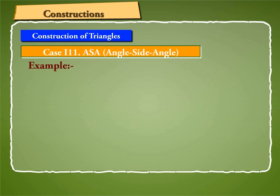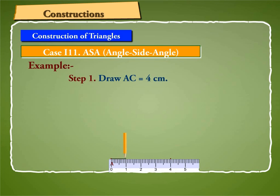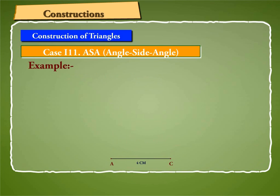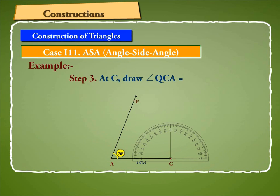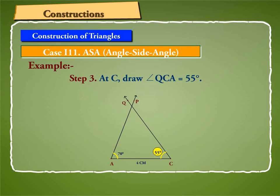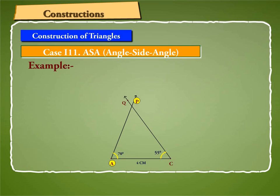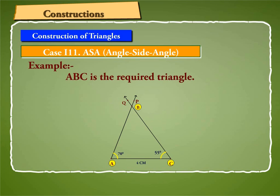We take the following steps. Step 1: Draw AC equal to 4 cm. Step 2: At A, draw angle PAC equal to 70 degrees. Step 3: At C, draw angle QCA equal to 55 degrees. Let PA and QC intersect each other at B. Then ABC is the required triangle.